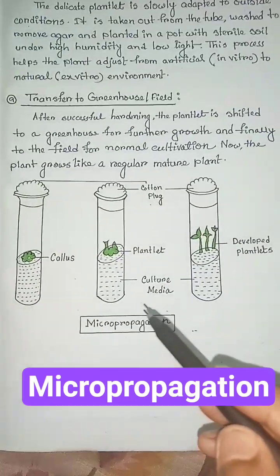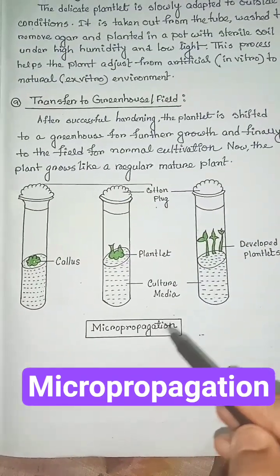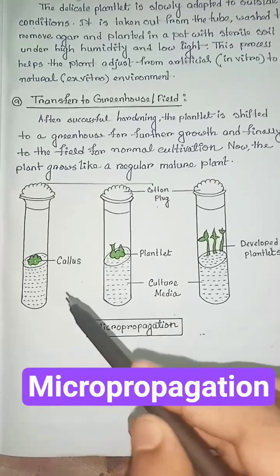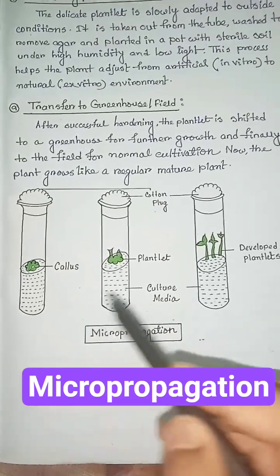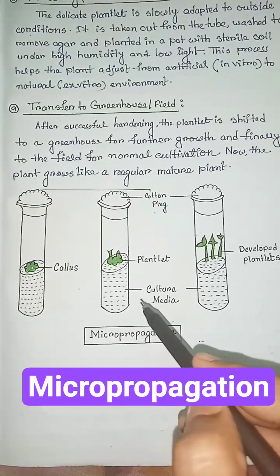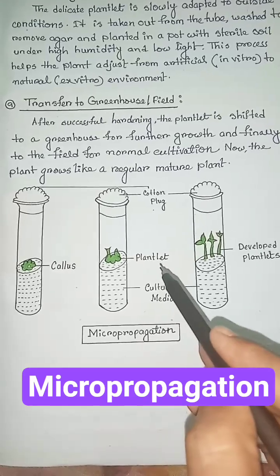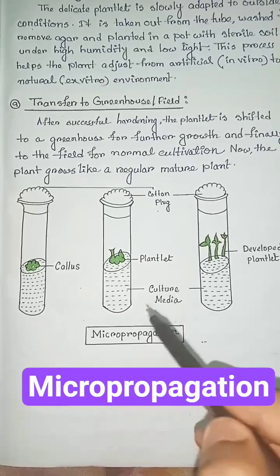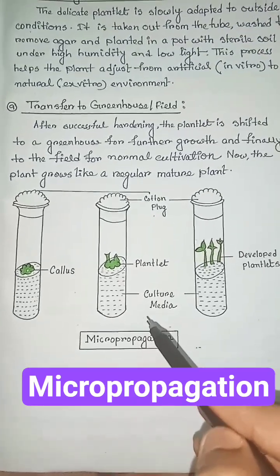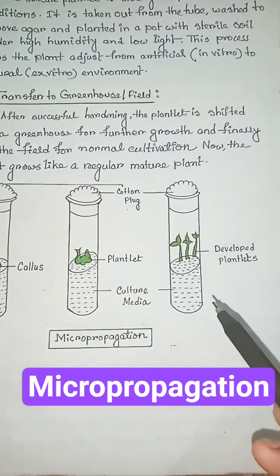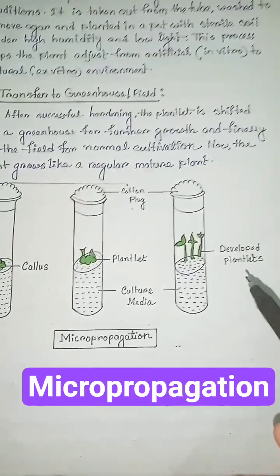This is a diagram of the micropropagation process. In the first test tube, we can see a callus. In the second test tube, we can see a plantlet forming in the cultured medium. And finally, in the third test tube, we can see a developed plantlet.